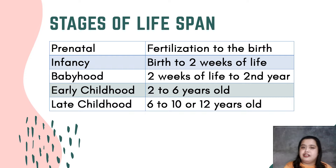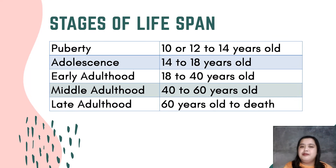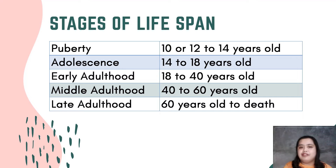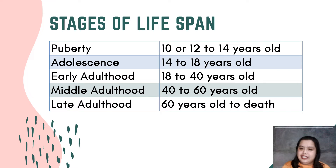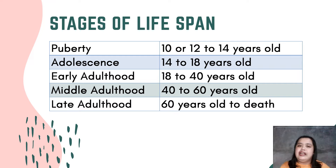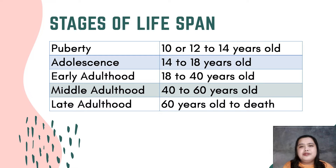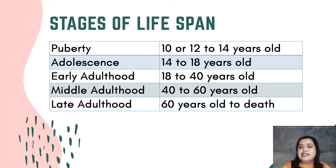The next five stages are: puberty, which is ten or twelve to fourteen years old; adolescence, fourteen to eighteen years old; early adulthood, eighteen to forty years old; middle adulthood, forty to sixty years old; and lastly, late adulthood, from sixty years old to death. As first-year students, you are likely either in the last part of adolescence or in the early stage of adulthood.